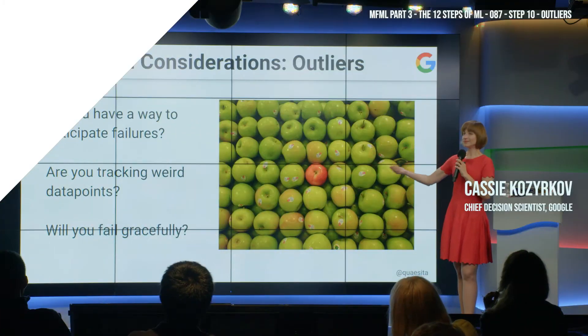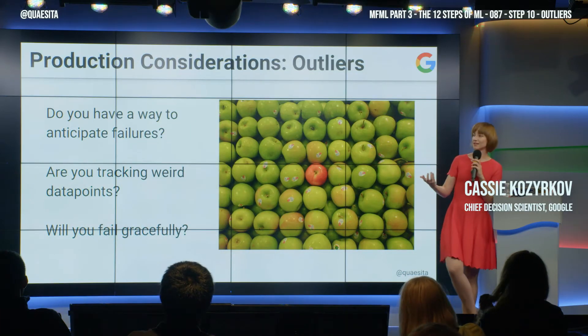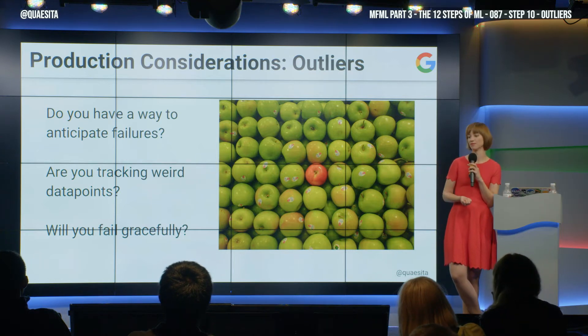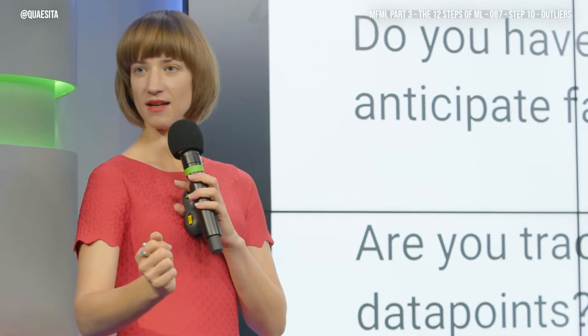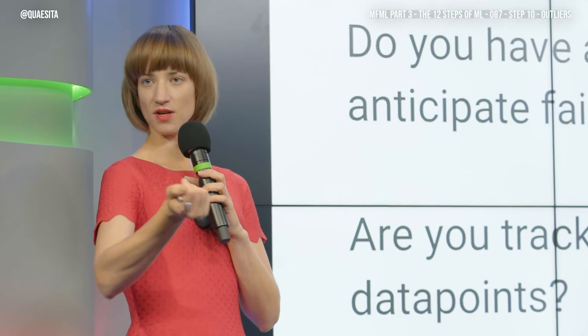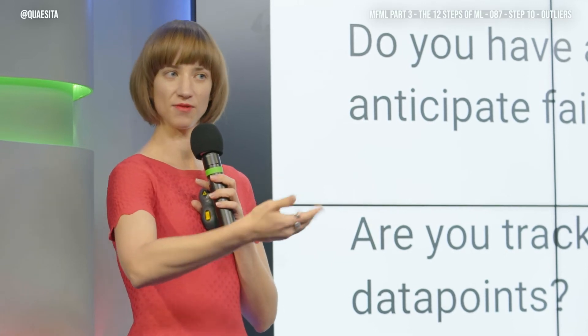In general, data points that are unlike the data that you have trained the system on are going to create mess-ups for you. When the strange data comes in, you'll probably mishandle it. Are you checking whether the data points are strange? Do you have a way to do that?